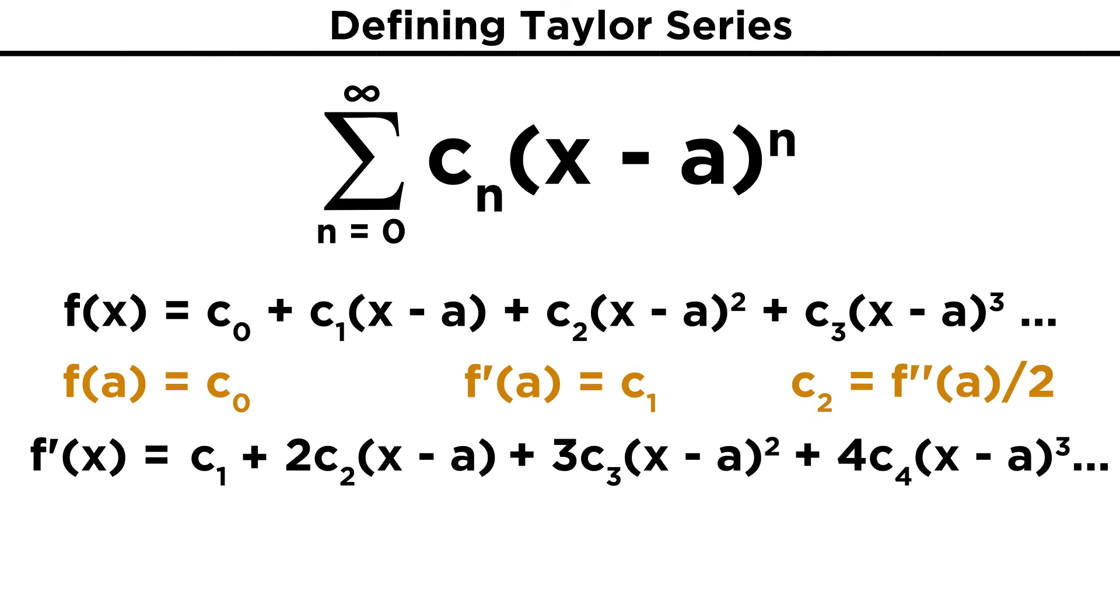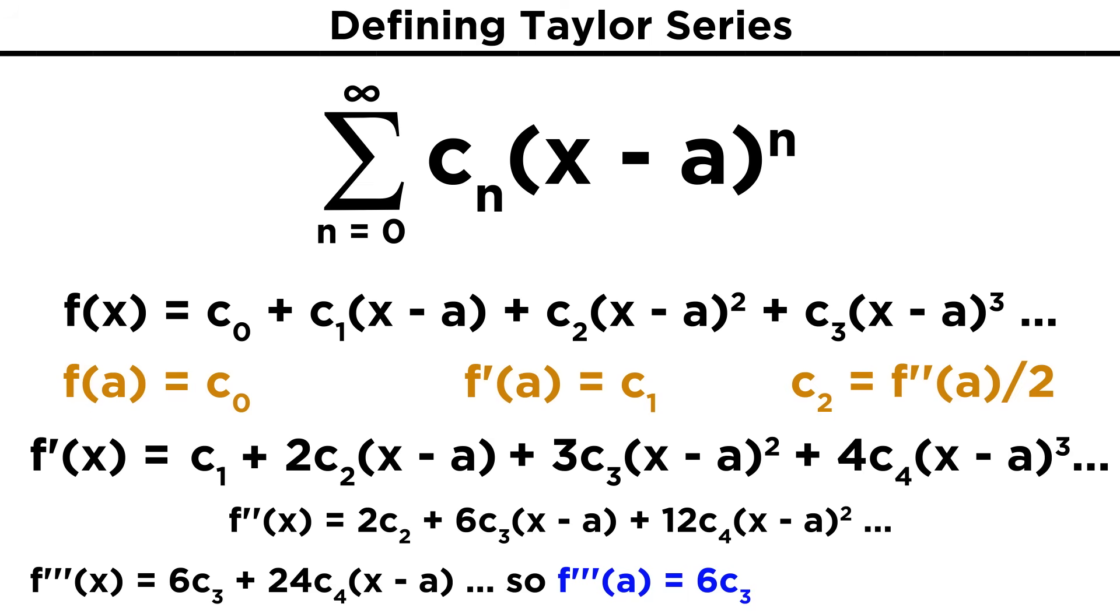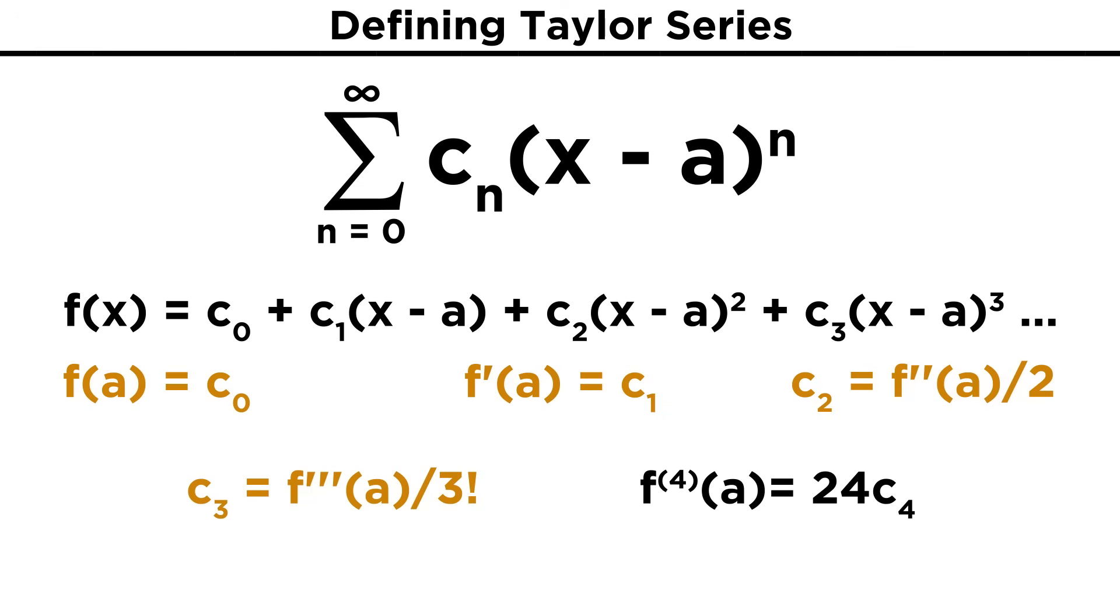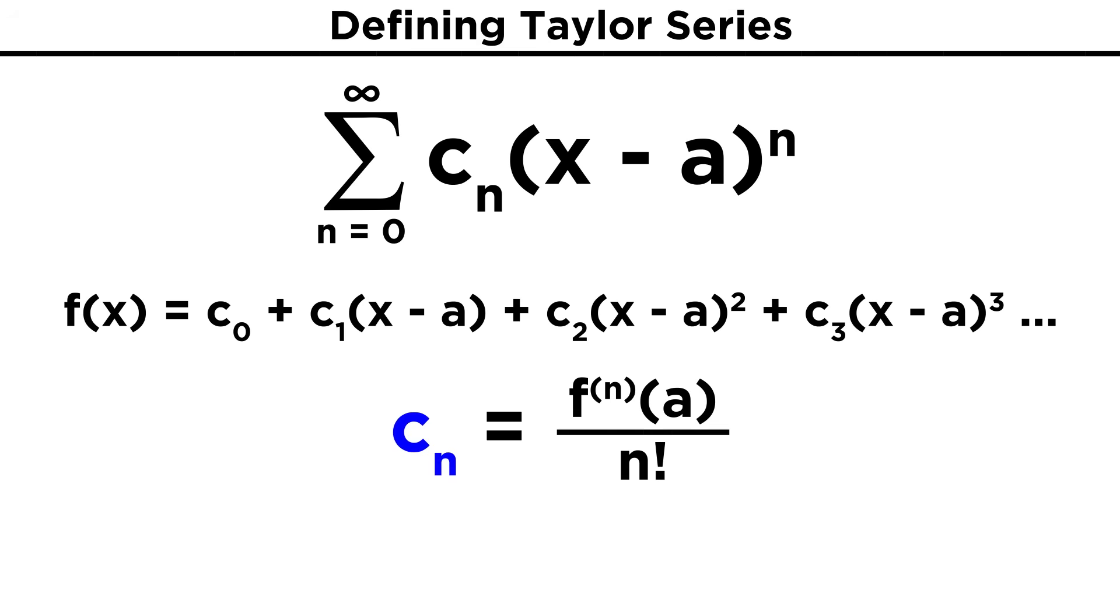By now we might see a pattern. Taking the third derivative and plugging in a will give us f triple prime of a equals six c three, or c three equals f triple prime of a over six, which can also be expressed as three factorial. Inputting a into the fourth derivative of f will give us twenty-four c four, meaning that c four equals the fourth derivative of f over four factorial. We can therefore set up an expression to find the nth coefficient of the series.